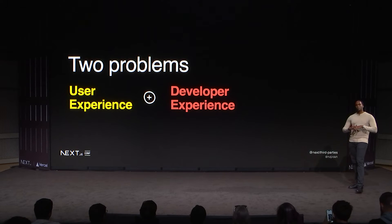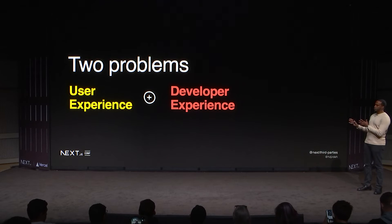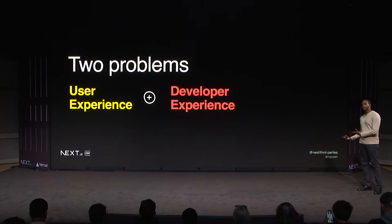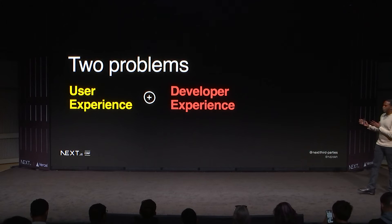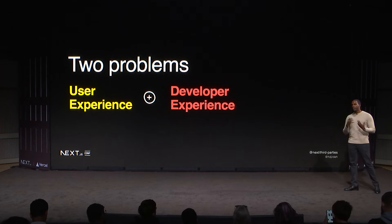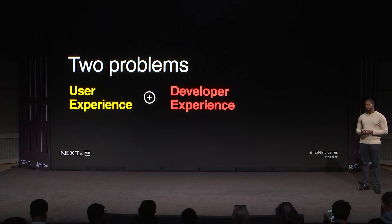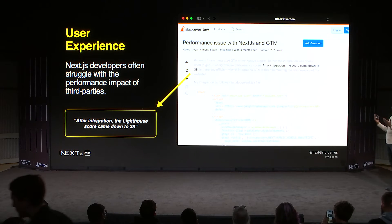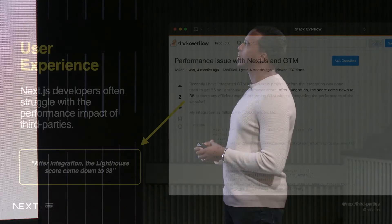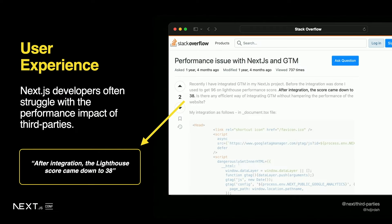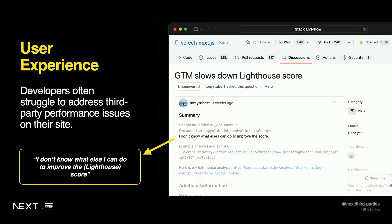Taking a step back, there are two problems here. First, there's a serious user experience problem: the data shows that loading more third parties degrades performance. Second, there's a developer experience problem: many developers don't know how to load popular third party scripts correctly, and when they do, they don't know how to handle performance issues or add custom functionality. We see this on Stack Overflow — one developer included Google Tag Manager in their Next.js site and their Lighthouse score dropped to 38. On GitHub, another developer similarly reported GTM slowing down their Lighthouse score with no idea how to improve it.